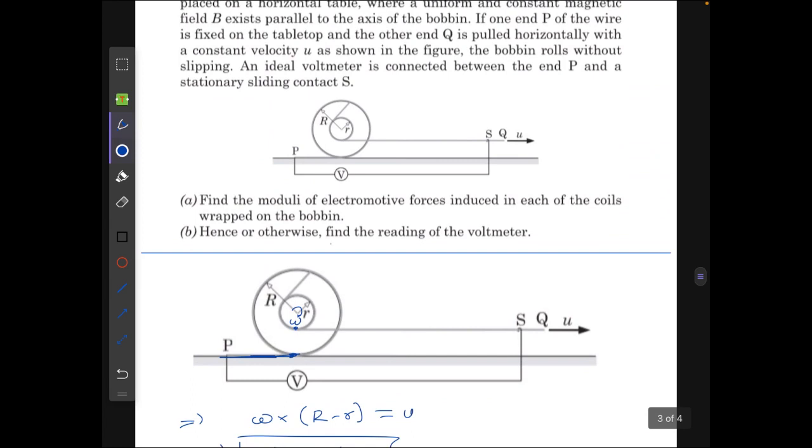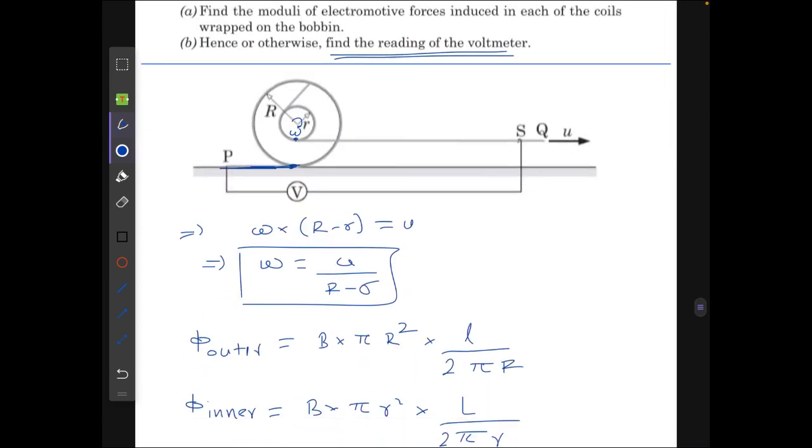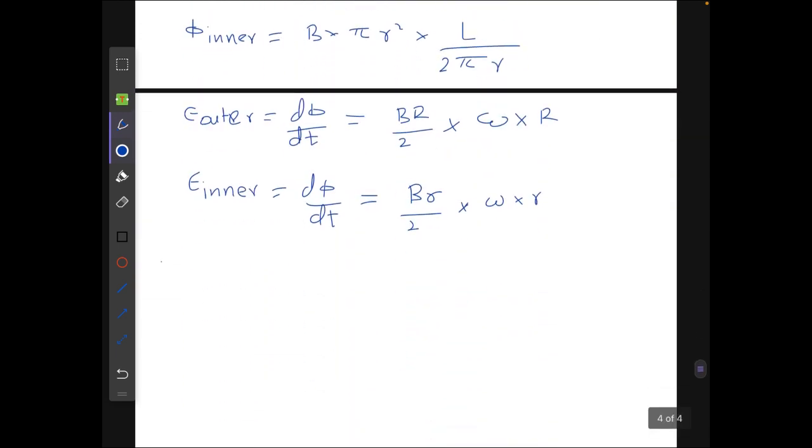For part b we have to find the reading of the voltmeter. Here we can see that the outer cylinder is actually unwinding the coil and inner cylinder is taking up coil, so the direction of flux in both are different, so the direction of EMF in both is different. So the reading of the voltmeter will be the difference of these two.